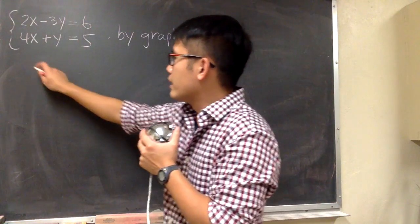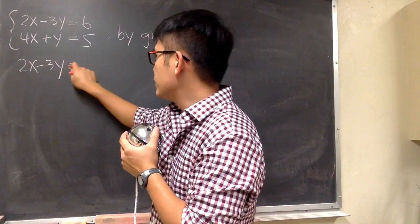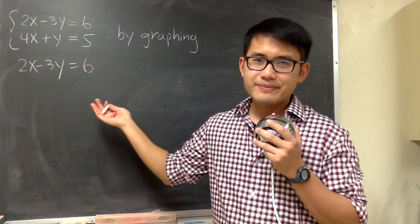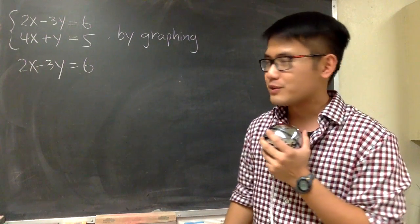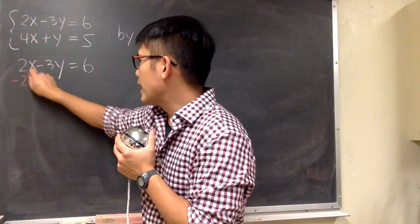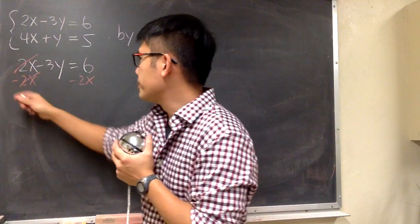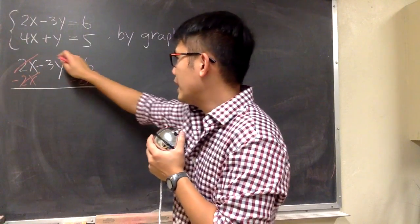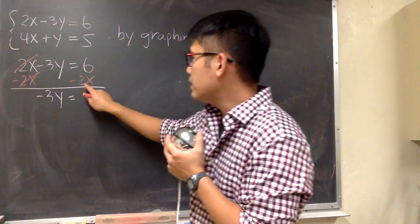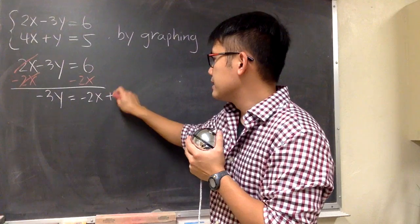Let's focus on the first one. We have 2x minus 3y, this is equal to 6. How do we graph this? Well, we want to isolate the y first. So that's minus 2x on both sides, so that these terms will be cancelled. And we have negative 3y equals negative 2x plus 6.